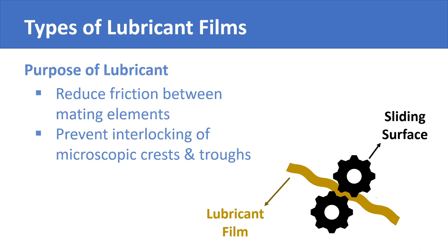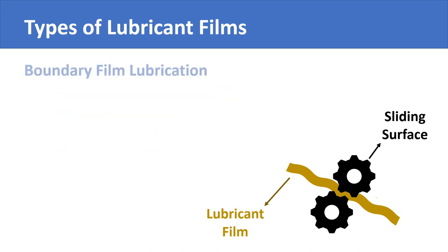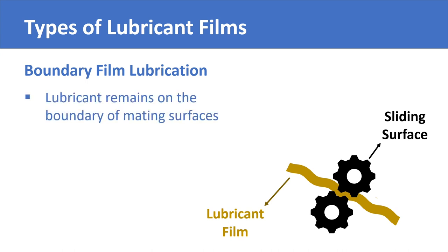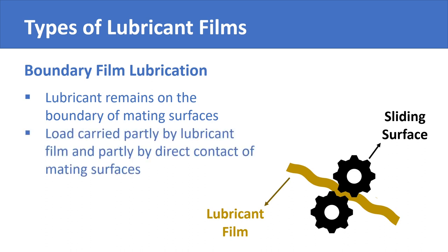This is what is called boundary film lubrication. The lubricant remains on the boundary of the mating surfaces. The load is carried partly by the film of lubricant and partly by direct surface contact.